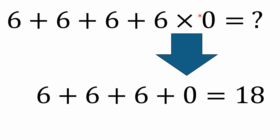People doing that are forgetting that multiplication has precedence over addition — that's part of the order of operations. There are also some people answering 24, which is really wrong. I've seen strange explanations for that, like claiming six times zero is still six, or that zero times six is zero but six times zero is six. I don't know where people are getting that idea.